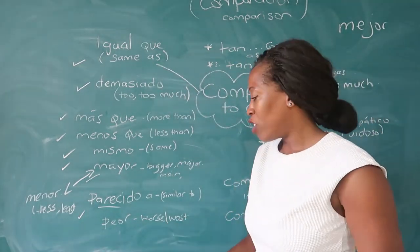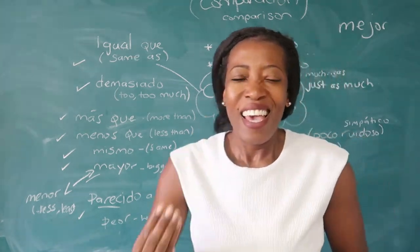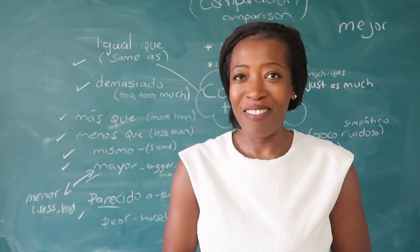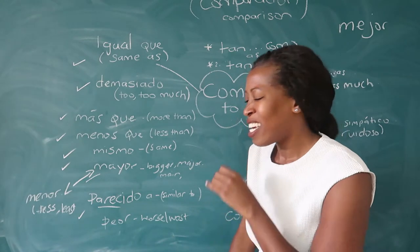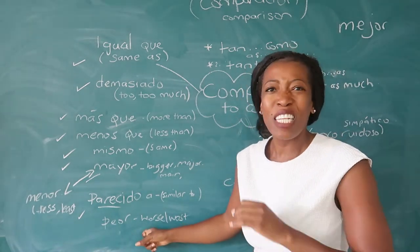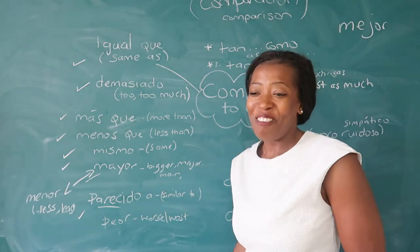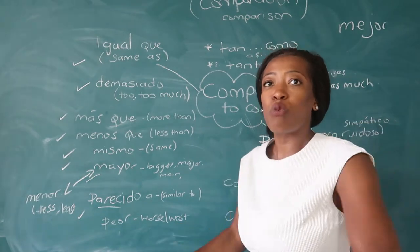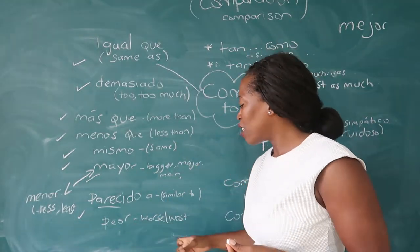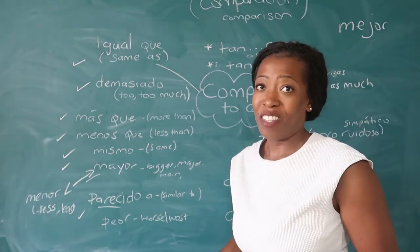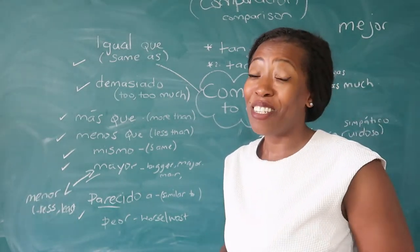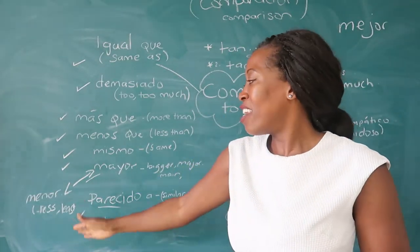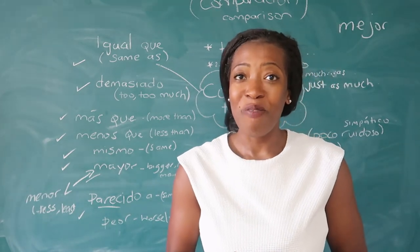Peor means 'worse' or 'worst.' For example: esta asignatura es peor que inglés — this subject is worse than English. If you're saying it's the worst: esta asignatura es la peor — it's the worst subject in the world. That's the superlative, which you also need to be able to use in Spanish — it's just adding el or la before the adjective.